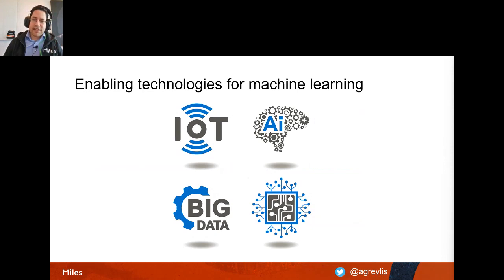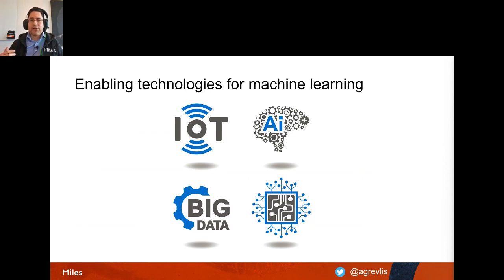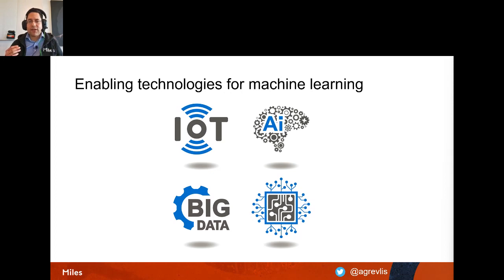Machine learning dates back to the 1950s but is a hot topic today due to enabling technologies: IoT sensors that provide access to large amounts of real-time data, big data solutions for transformation and loading in the cloud, and machine learning libraries and components that developers can use through different APIs and services.